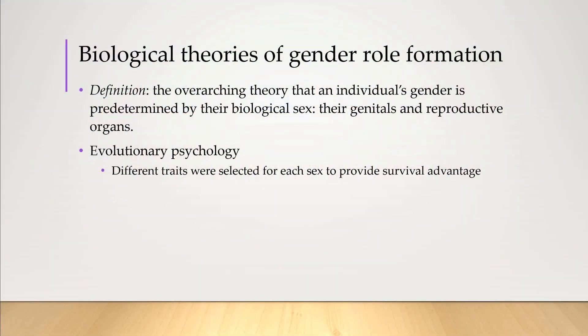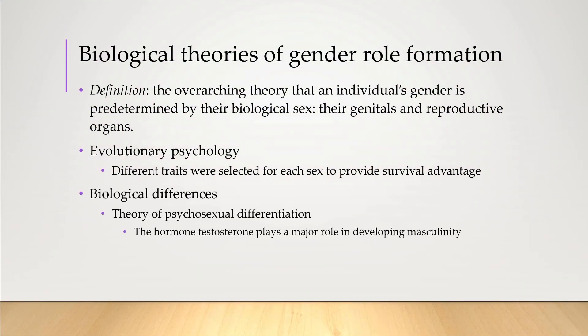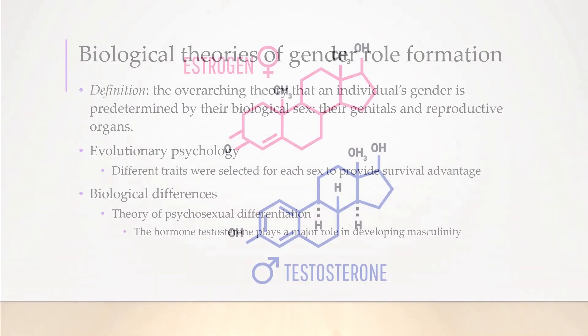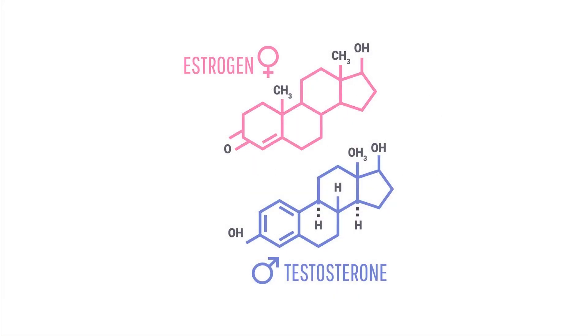Another idea is the theory of psychosexual differentiation, which relies heavily on hormones to explain gender differences. When transgender men — that is, those born female at birth — undergo hormone replacement therapy, the added testosterone often increases male mental abilities, including an increase in visual-spatial awareness and aggression. Estrogen has also been associated with an increase in language ability. So it seems that the hormone that most influences the body during puberty could explain various gender traits.